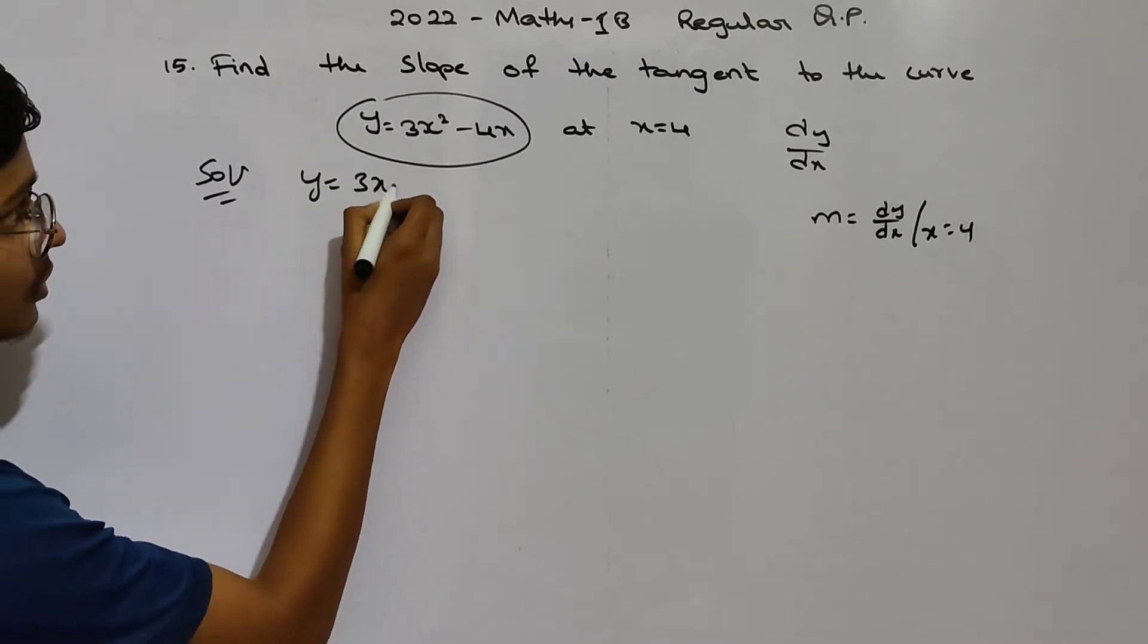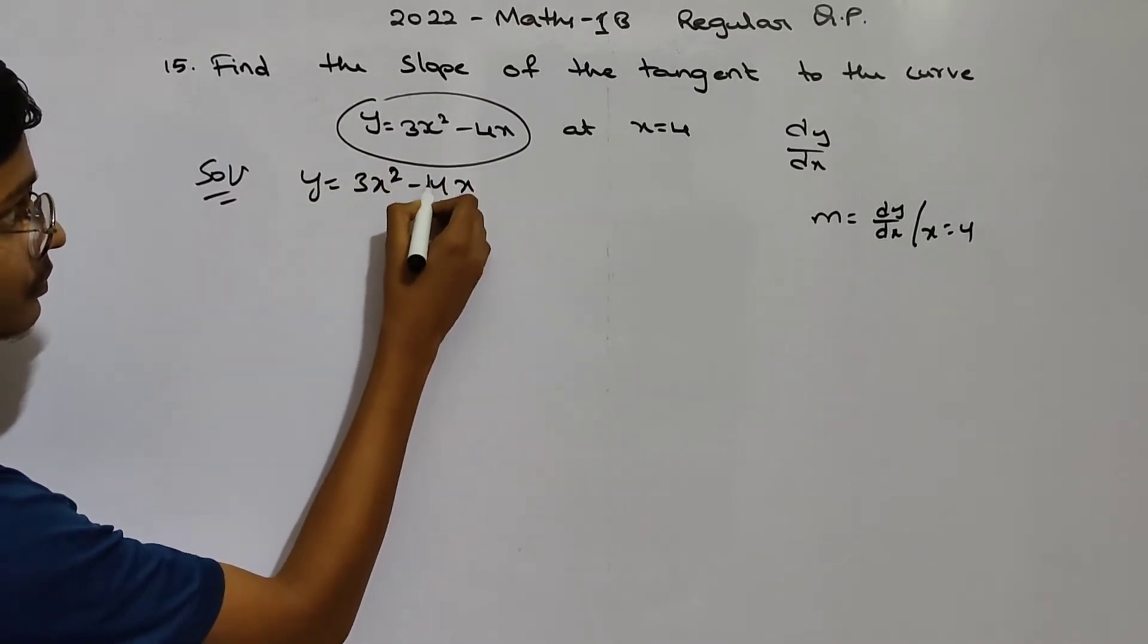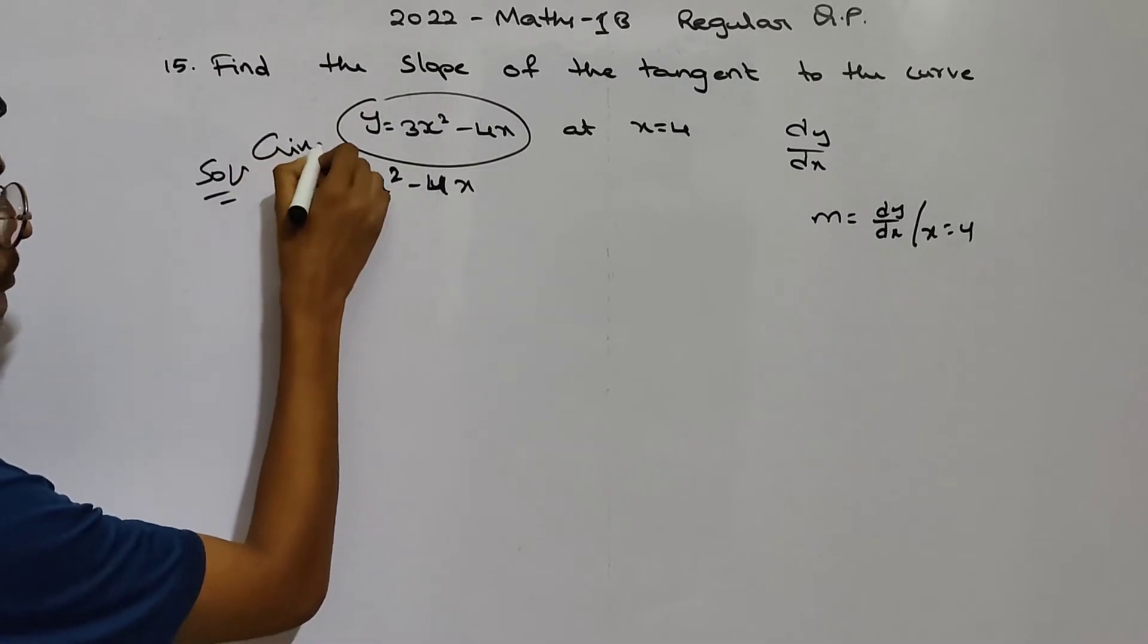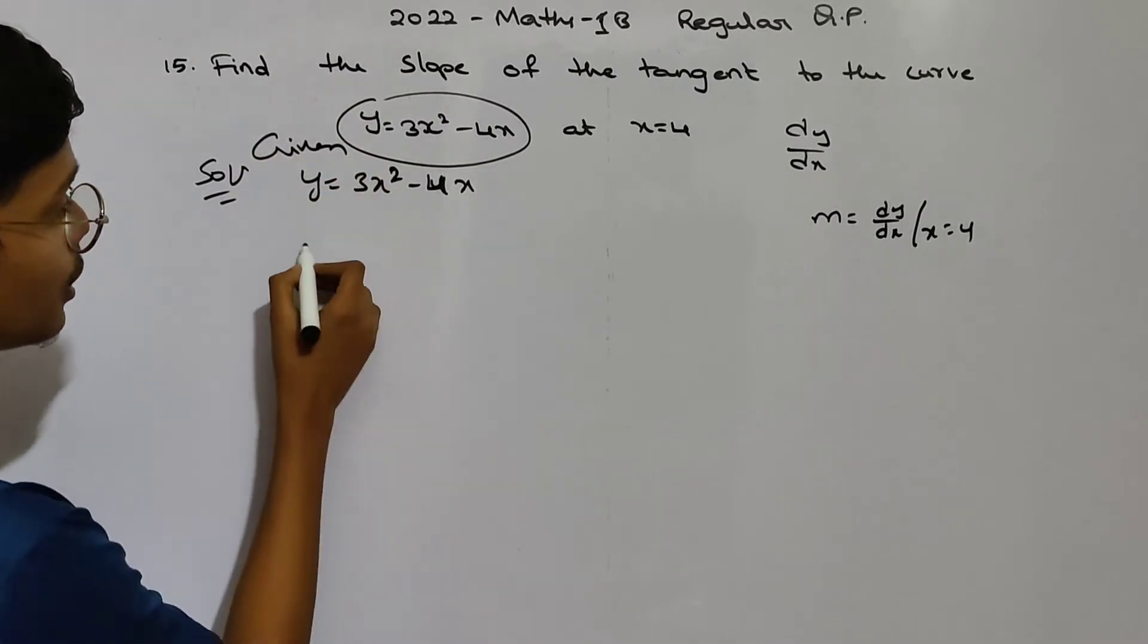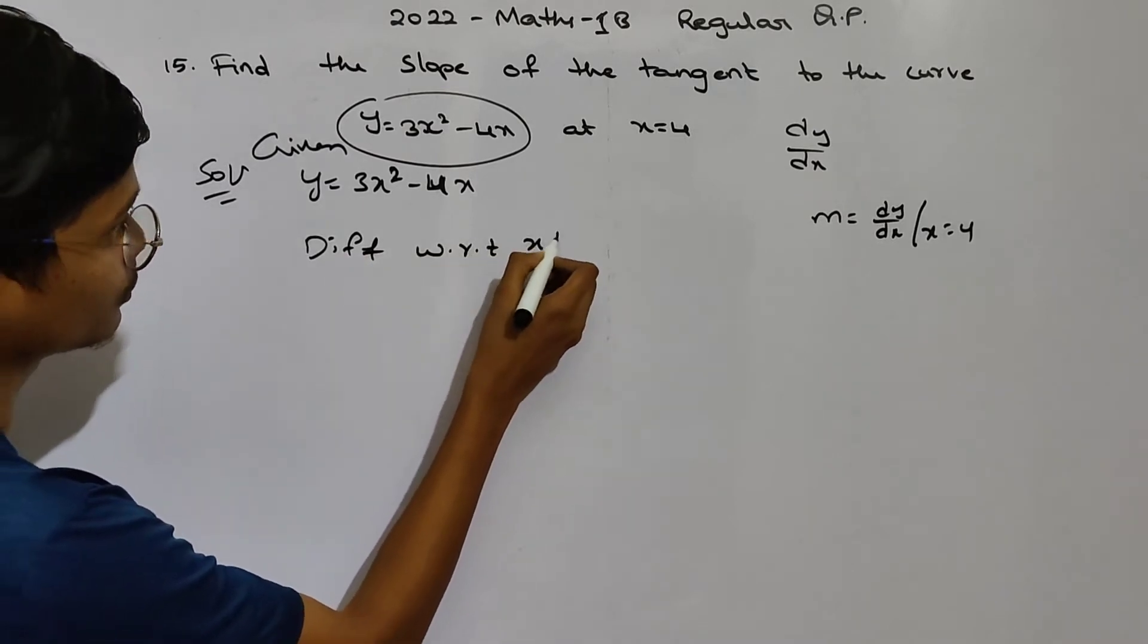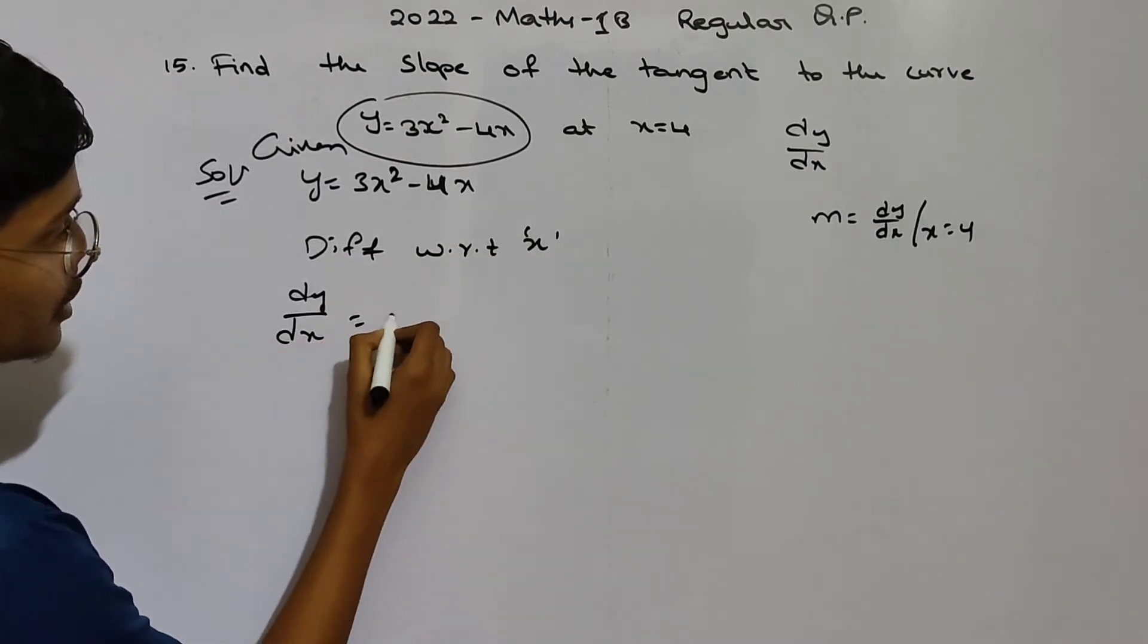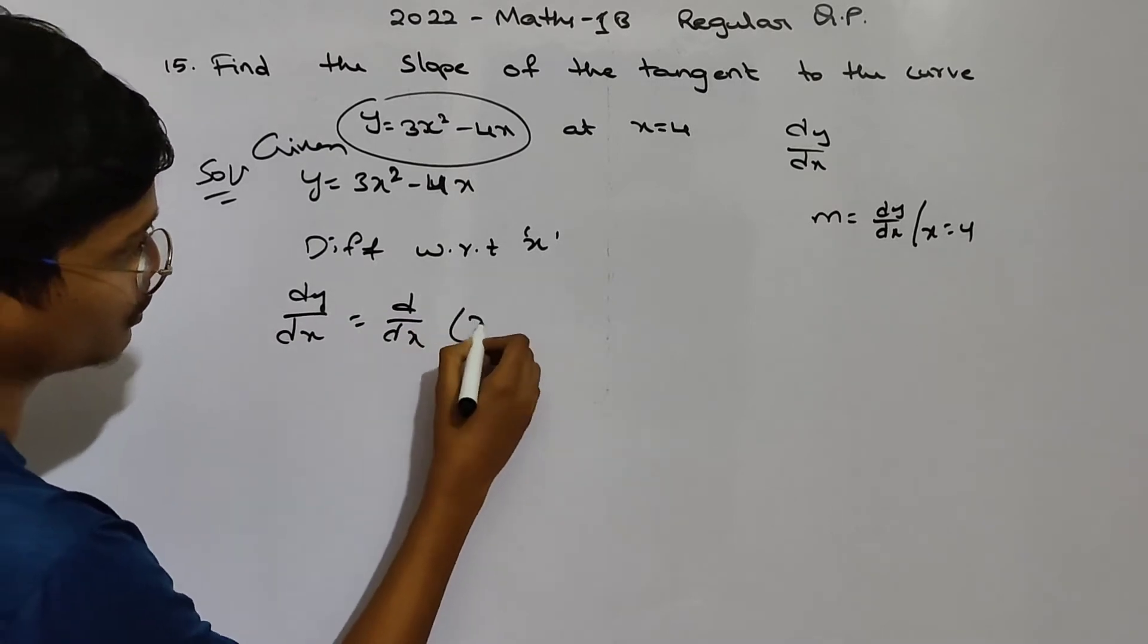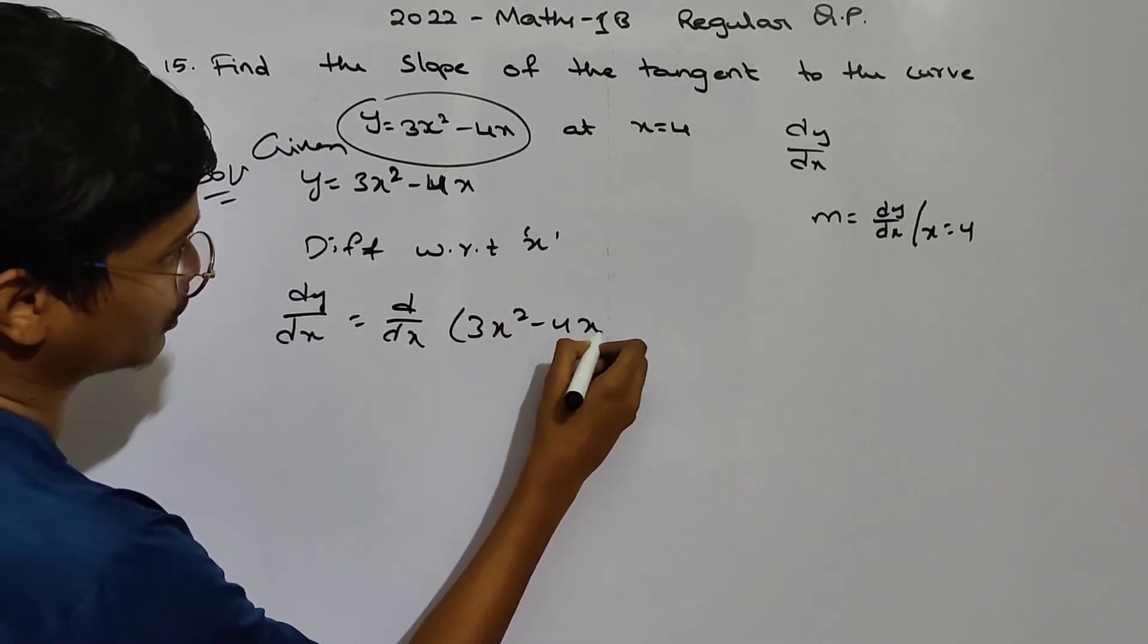y equals to 3x square minus 4x. Given. Differentiate with respect to x.